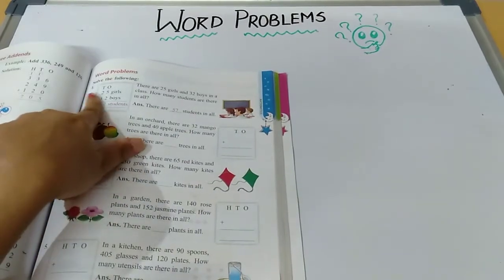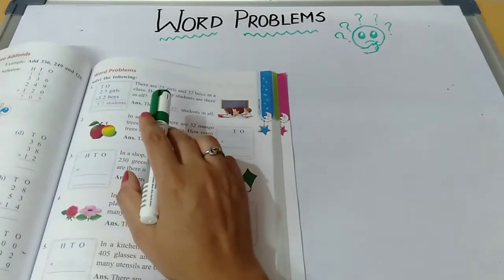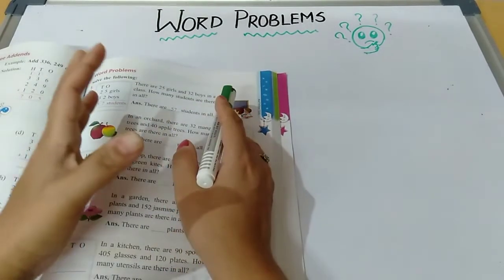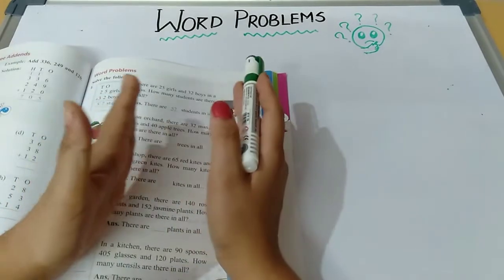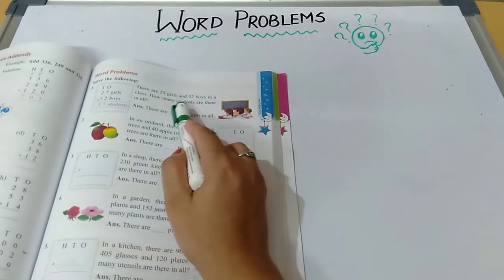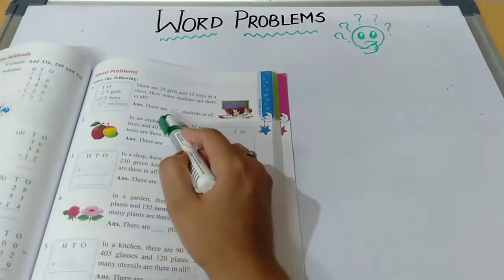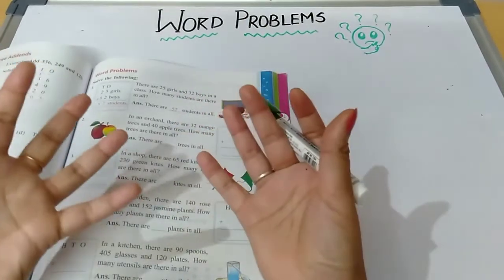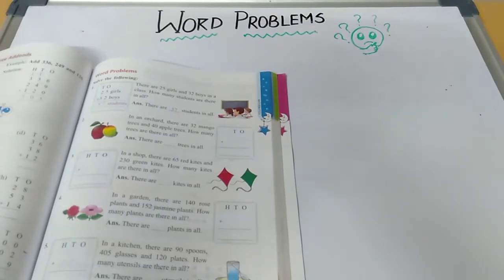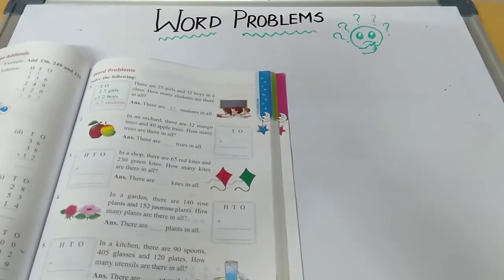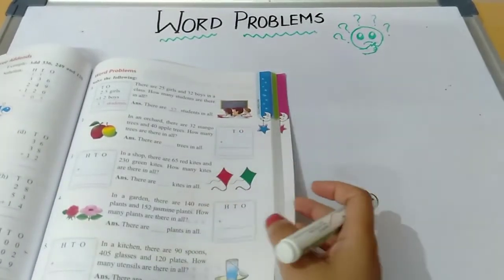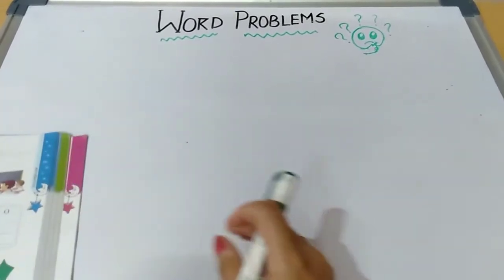Here you can see the first one: there are twenty-five girls and thirty-two boys in a class. The information given is 25 girls and 32 boys. The question is: how many students are there in all? Whenever 'in all' is asked, you have to add. Yes — in first class also you have solved word problems, so let us see how we write the solution.